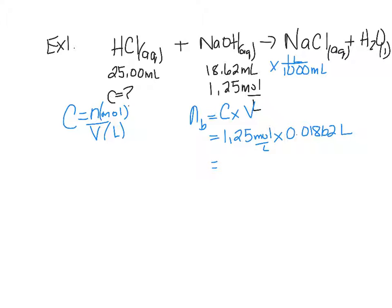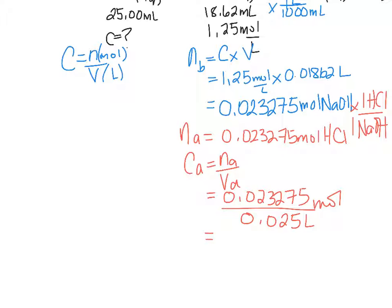Evan? I got 0.0231 moles per liter. Anybody else? Anybody verify that number? So convert to moles of acid, divide the moles of acid by the volume of acid, and you get 0.931.